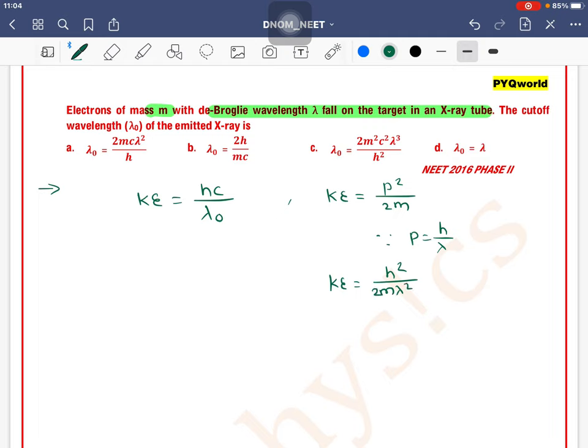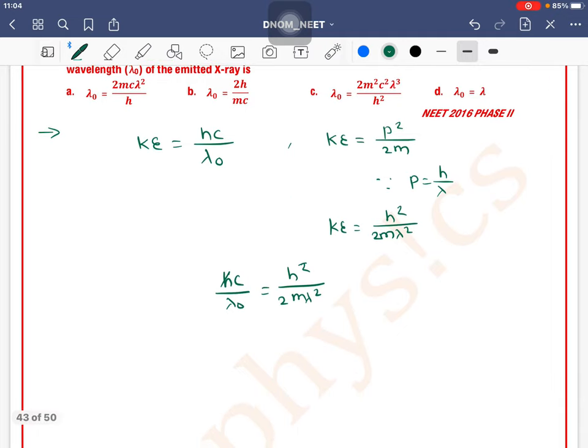If we compare these two kinetic energies, we will get hc by lambda naught equals h squared divided by 2m lambda squared. This h and this h get cancelled out.